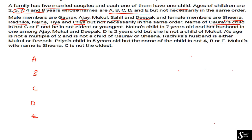First clue: the name of Gaurav's child is not C or E, and Gaurav's child is not the eldest or youngest. The eldest is 8 years and the youngest is 2 years, so Gaurav's child cannot be 2 years or 8 years old.